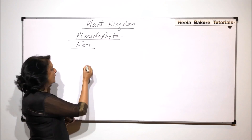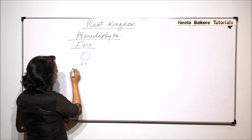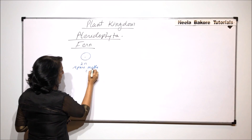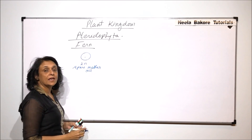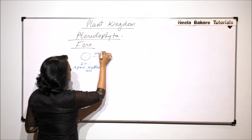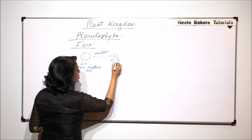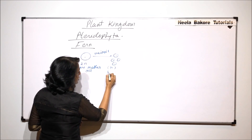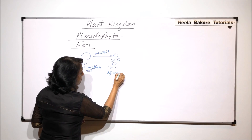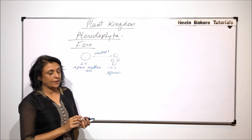If you remember, in the sporangium, there was a diploid spore mother cell and these spore mother cells undergo meiosis to produce haploid spores. So these are the spores which are produced by meiotic division and these spores are going to germinate.